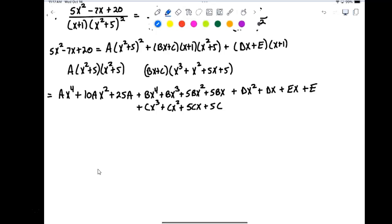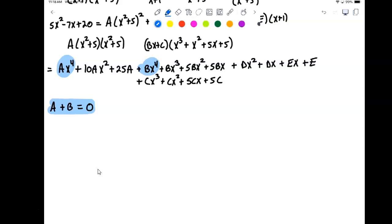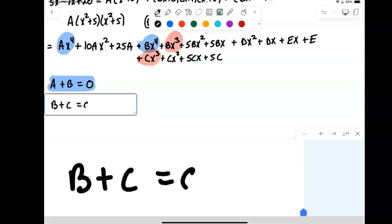So up first, I'm going to start with my ax to the fourth. And I also have a bx to the fourth. And those are all the x to the fourths. And there are no x to the fourths on my left-hand side. So that's going to give me my first equation: a plus b has to be equal to zero. Then we continue down. Next power that I see is an x to the third. So I have an x to the third there, and then I look through everything else. I see I have another x to the third there. And those are all the x to the thirds.